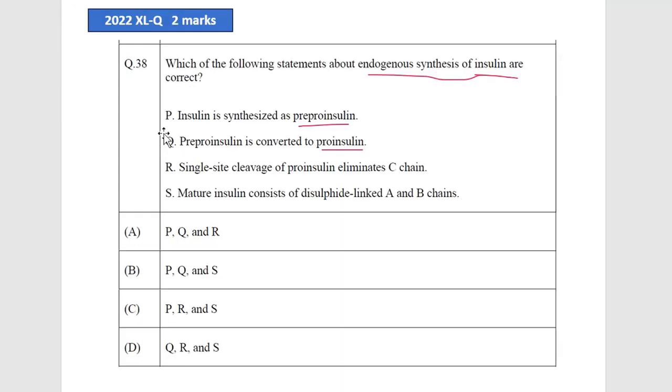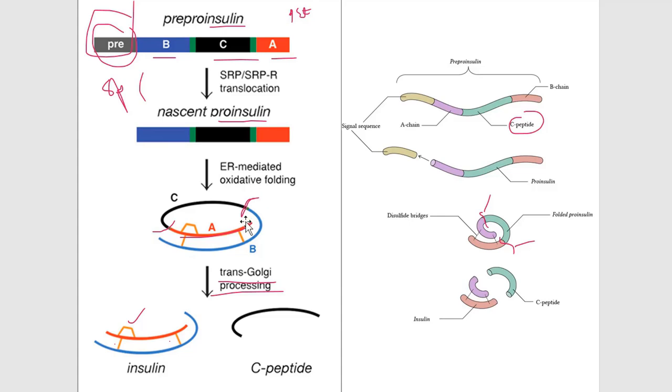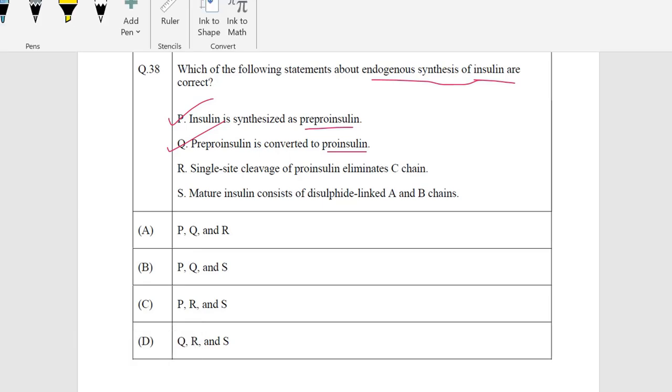Now we come back to this question. Insulin is synthesized as pre-pro-insulin, which is correct. Pre-pro-insulin is then converted to pro-insulin, which is also correct. Single-site cleavage of pro-insulin eliminates the C chain—we have cleavage at two points to eliminate the C chain, so this option is wrong. Option R is wrong.